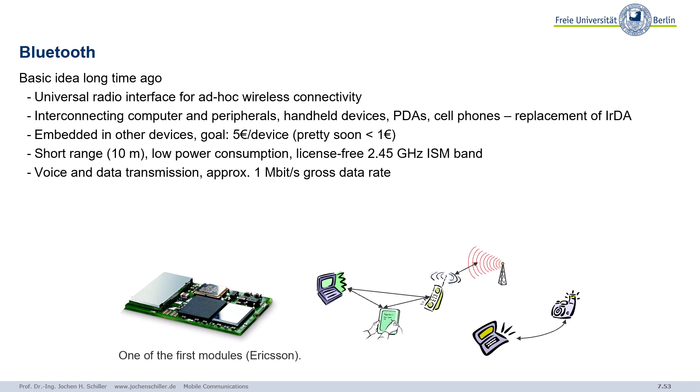Now, something almost completely different: Bluetooth. What was the idea many years ago? The idea was how can we replace wires — we need wires between headsets and a mobile phone, between a computer and a mobile phone. Back then we used infrared — infrared data association — a standard using infrared light to exchange data. But you have to direct the devices so they see each other, so that's also not an ideal solution.